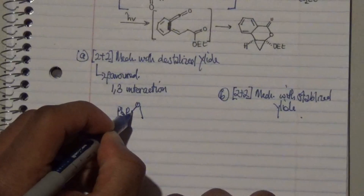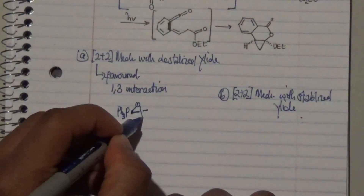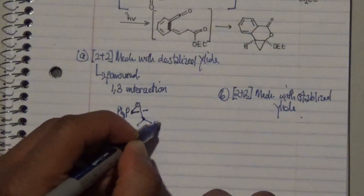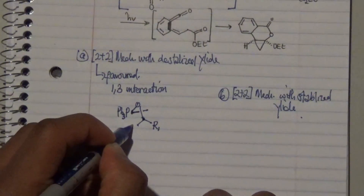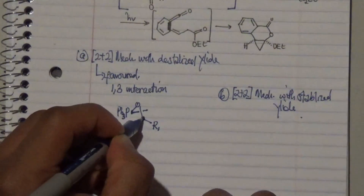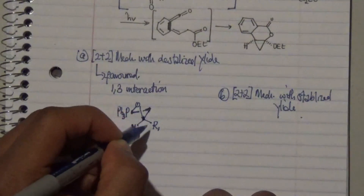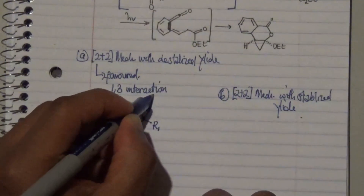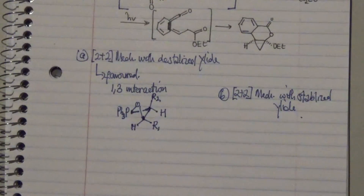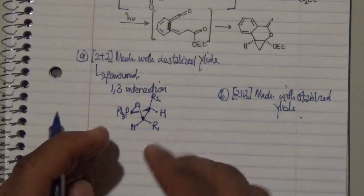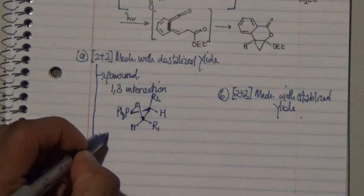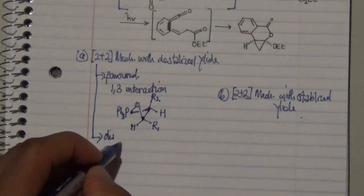In this favored intermediate, the PPh3 is spaced out from the other reagents, which include a bulky R group with H present and a bond between this carbon and another carbon bonded to another bulky R group with hydrogen. This arrangement gives us the favored intermediate.